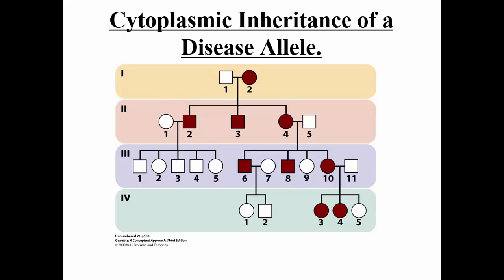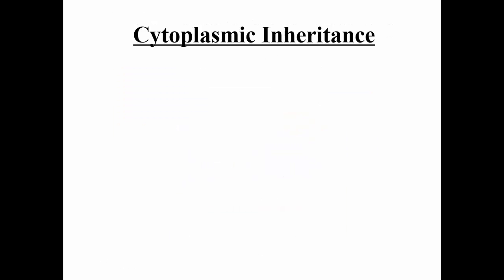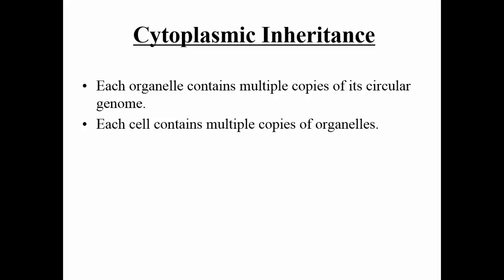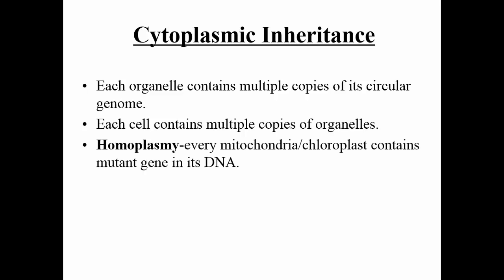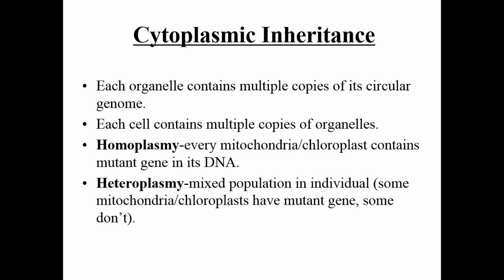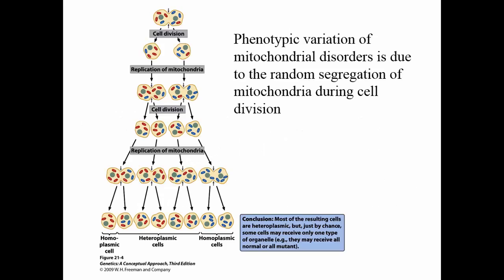Whenever you look at a pedigree showing cytoplasmic inheritance, you can identify it because the abnormality, whenever it hits a male, stops — it doesn't persist through the generations since males cannot pass it on. The abnormality persists only through the female lineage. Each cell has multiple mitochondria, so the abnormality can be homoplasmic — all mitochondria in a cell are affected, producing a very severe phenotype — or heteroplasmic, meaning only some mitochondria are affected, resulting in more variable phenotypic expression.